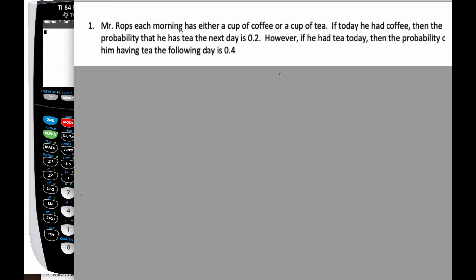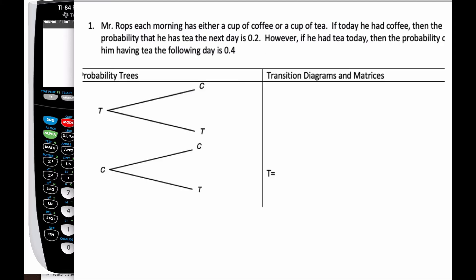Looking at this example: Mr. Rops each morning has either a cup of coffee or a cup of tea — he's got to have some caffeine. If today he had coffee, then the probability that he has tea the next day is 0.2. However, if he had tea today, then the probability of him having tea the following day is 0.4.